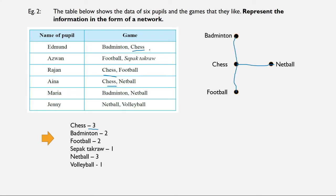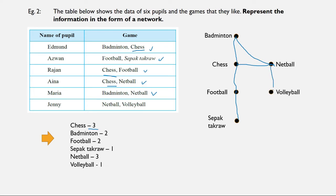This part of the tree is already done. Then we look at the second part — football and Sepak Takraw. We already have football, so just add one more vertex to represent Sepak Takraw. Then we have badminton and netball, so join badminton to netball. And the last one is netball and volleyball, so just join one more vertex for volleyball. Don't forget the last step: write down all the names of the pupils at the side of the edges.